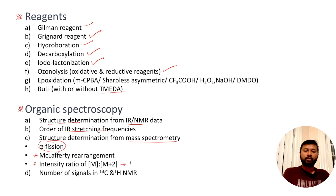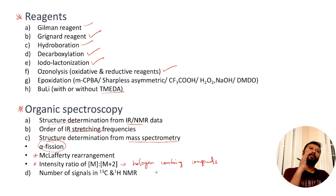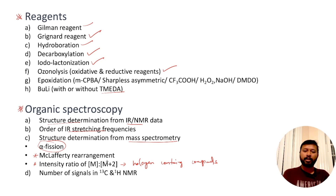The intensity ratio of M, M+2, and M+4 peaks is important for halogen-containing compounds. If a molecule has one chlorine, M and M+2 peak ratio is 3:1. One bromine gives a 1:1 ratio. Two chlorines give M:M+2:M+4 as 9:6:1, and two bromines give 1:2:1. You should be able to solve such questions based on relative abundance of isotopes. This has also been asked for other molecules — for example, an iridium chloride compound.